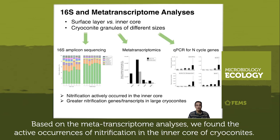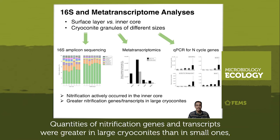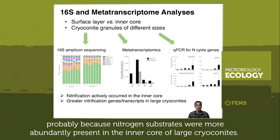Based on the metatranscriptome analysis, we found the active occurrences of nitrification in the inner core of cryoconites. Quantities of nitrification genes and transcripts were greater in large cryoconites than in small ones, probably because nitrogen substrates were more abundantly present in the inner core of large cryoconites.